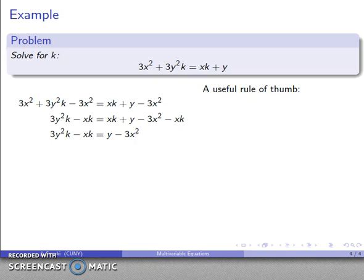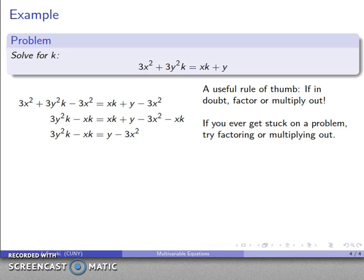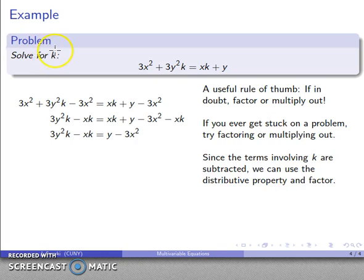Now it might not be obvious what to do next, so here's a useful rule of thumb. And as much as I hate reducing mathematics to jingles, here's a nice one that actually turns out to be useful. If in doubt, factor or multiply out. If you're not sure what to do next, if you ever get stuck on a problem, try factoring or multiplying something out. What this does require is you have to be able to identify which of these two things you can do. The thing to notice here is we don't care about anything except for the k terms. The terms involving k are subtracted, and that means that I can apply the distributive property and factor.